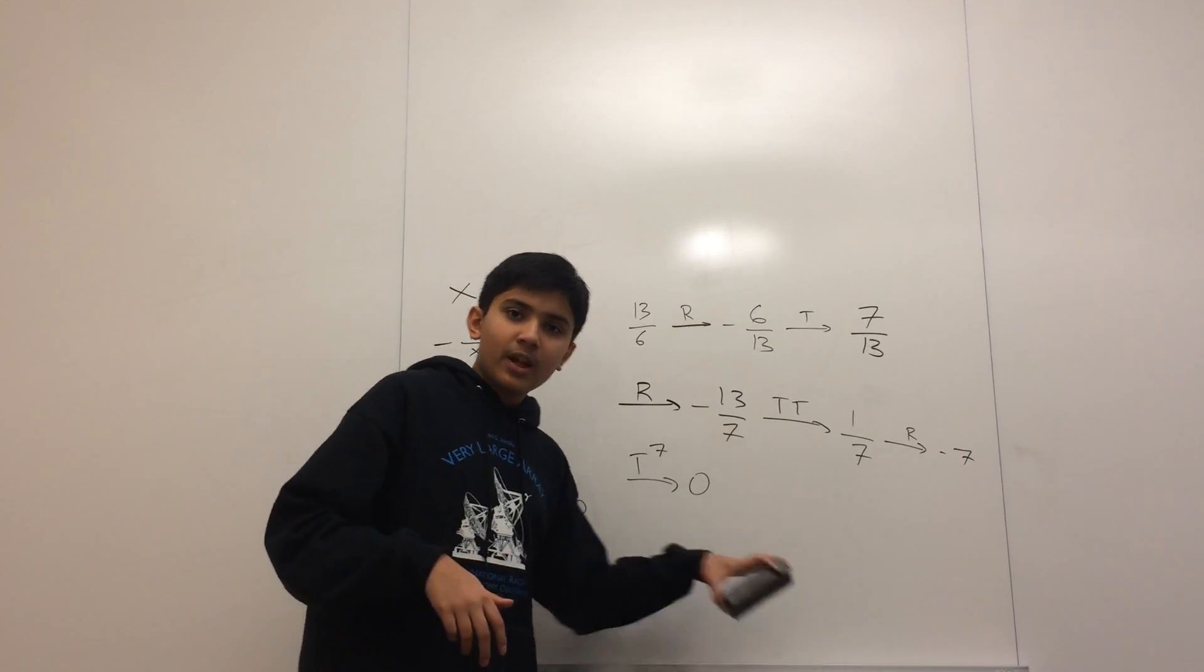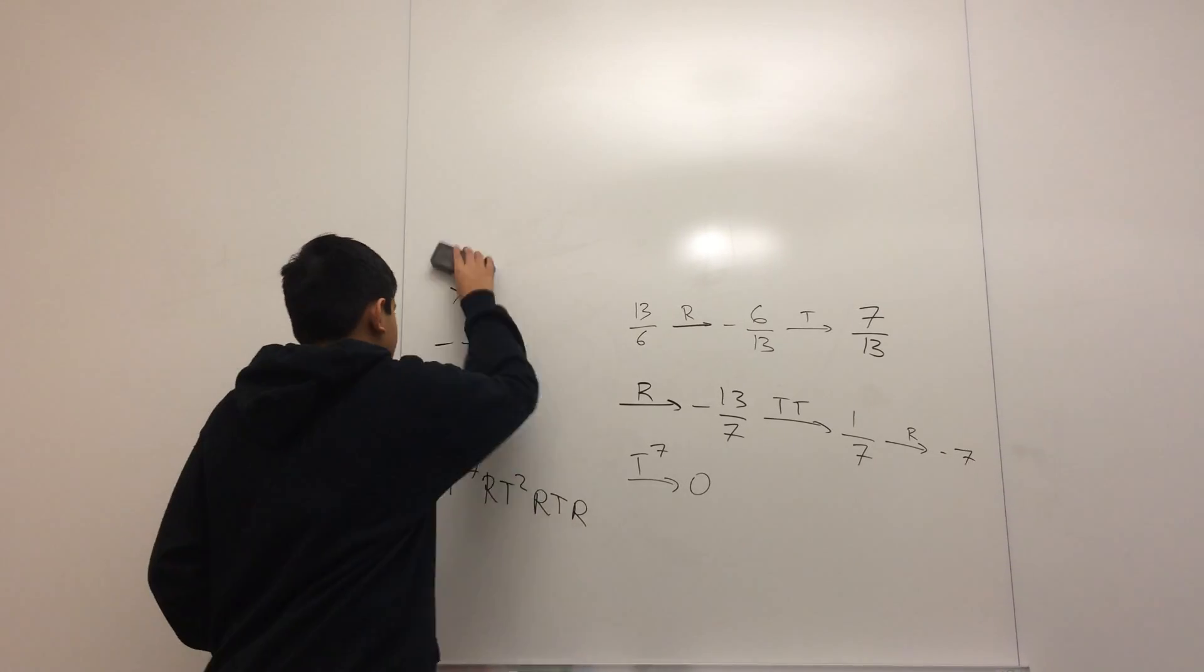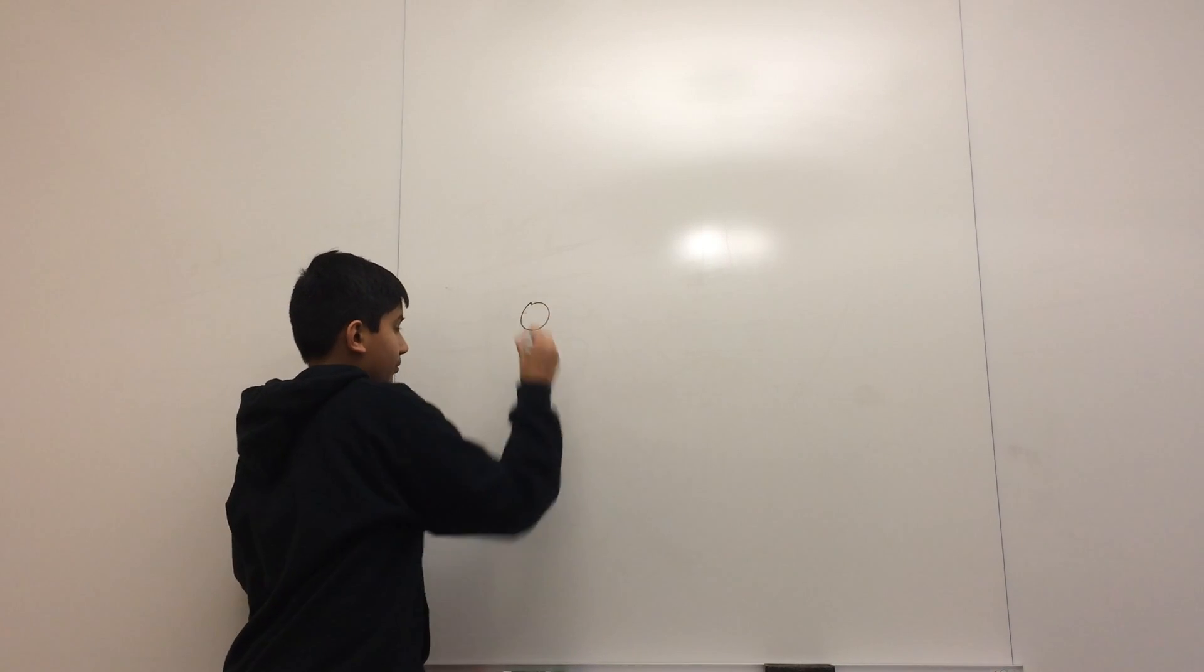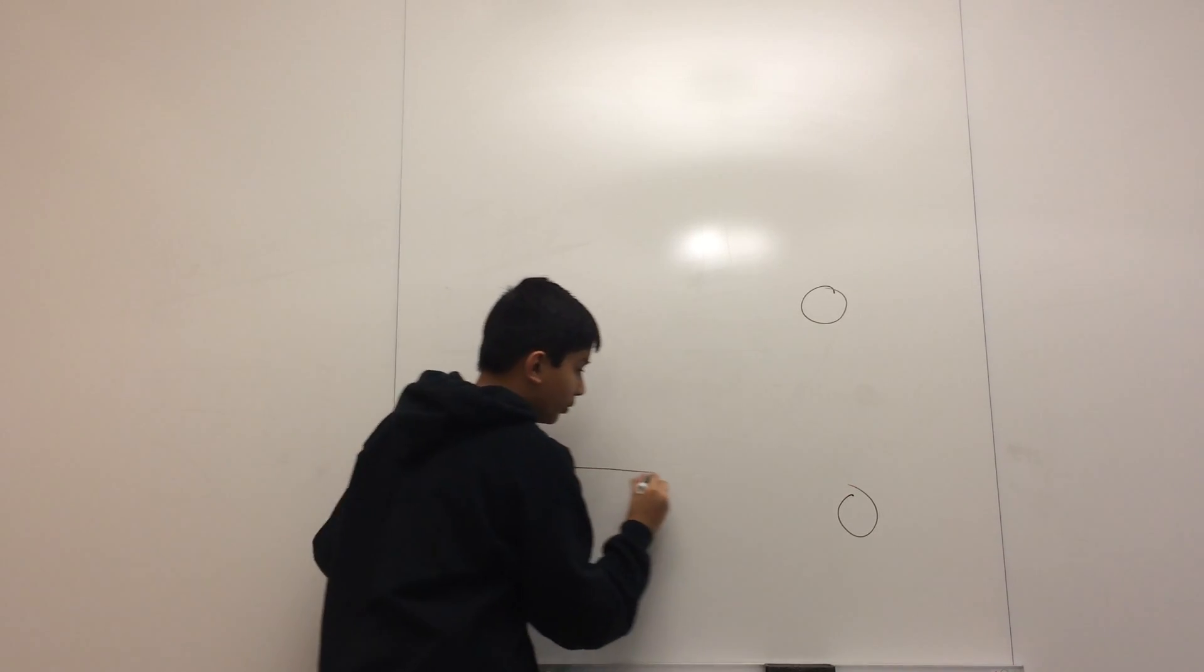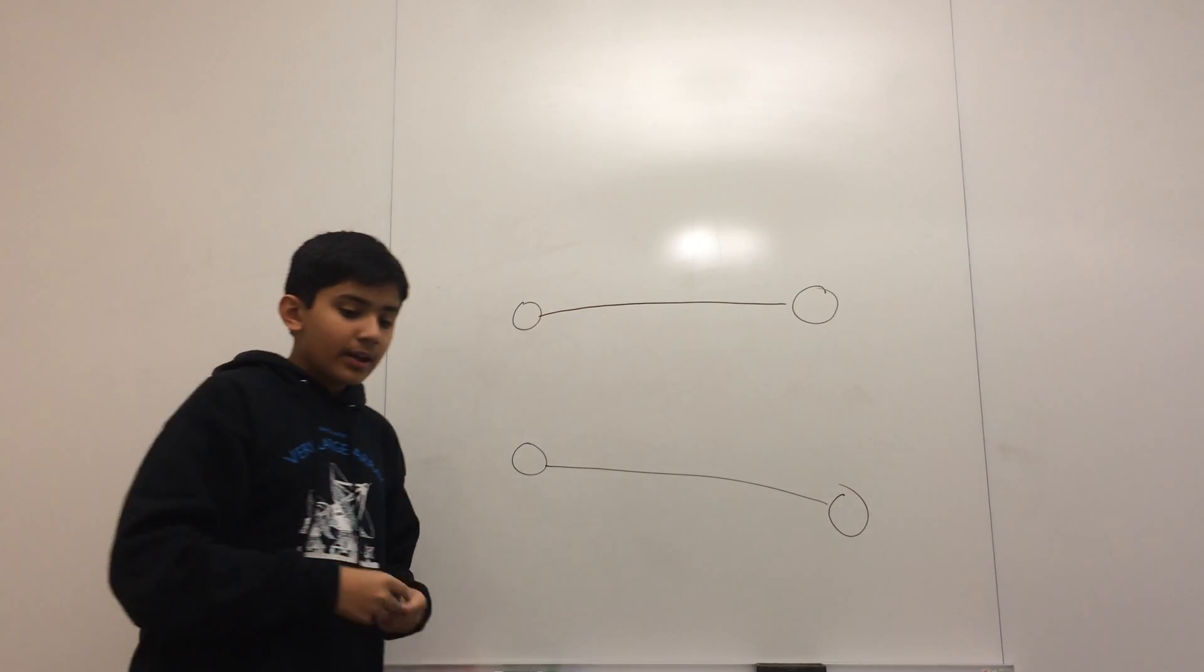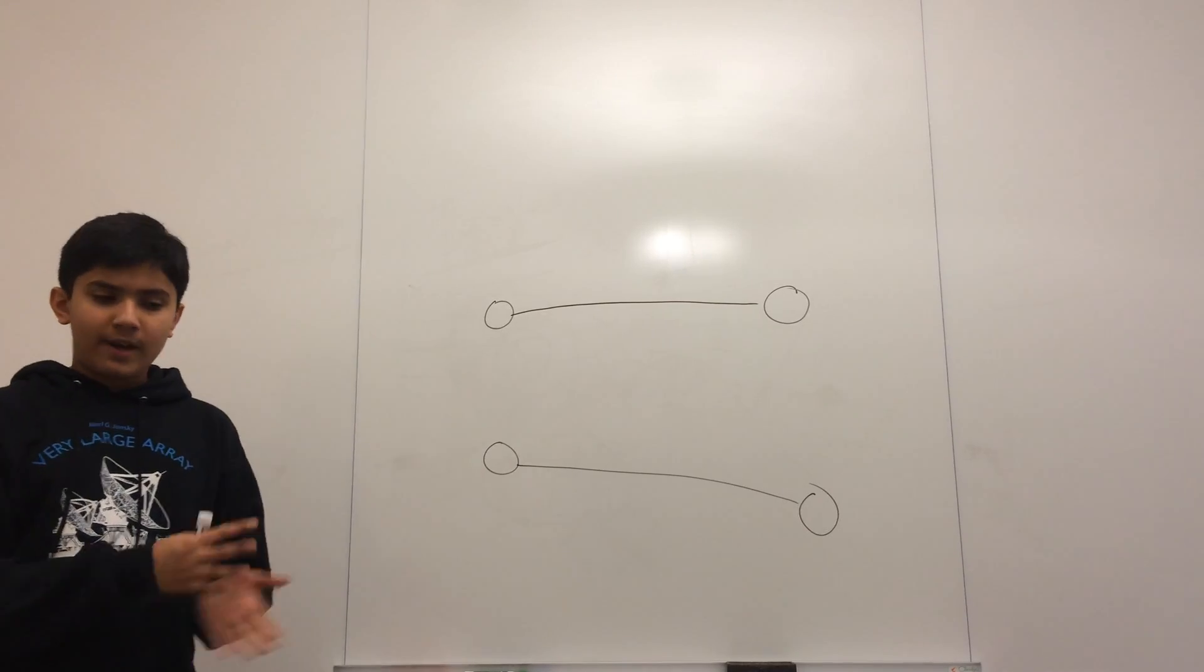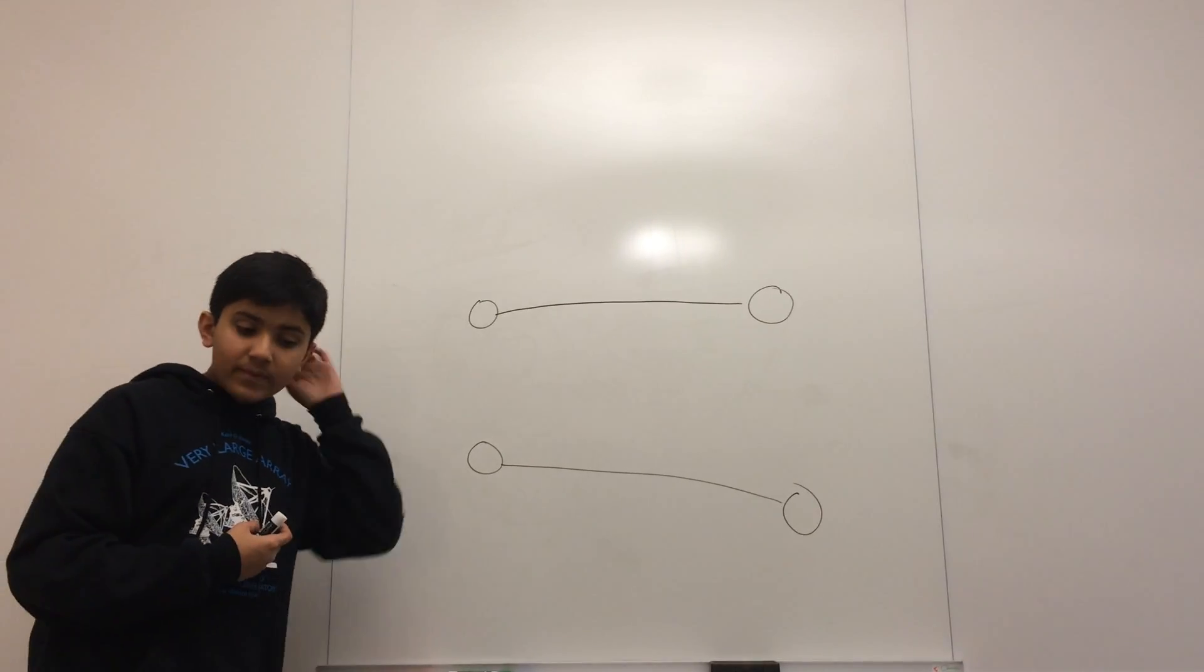Now we're basically done. I will show you a little activity which is pretty fun to do, but you'll need four people to do it. Have four people like this. Get some long string. Have these two people hold the string. Have these two people hold the string. Then what you want to do is write down a random sequence of t, r, and t inverses, let's say 20 steps long. Just write it down.